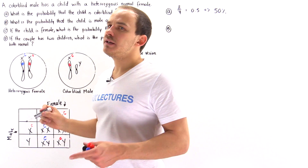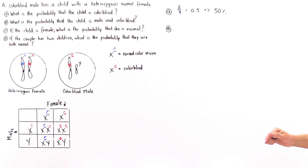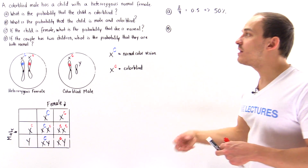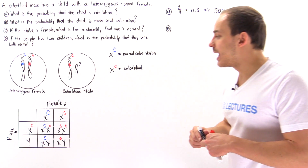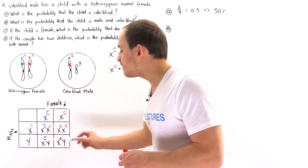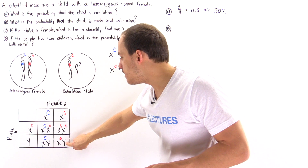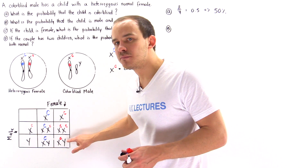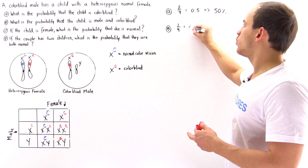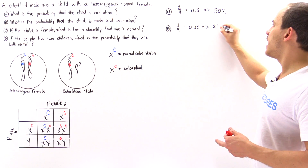In part B, what is the probability that the child is not only colorblind but also male? We want to look at the square that contains a male who is colorblind. Only one of the four squares satisfies this condition. So we have a one-fourth chance, equivalent to 0.25, or 25%.